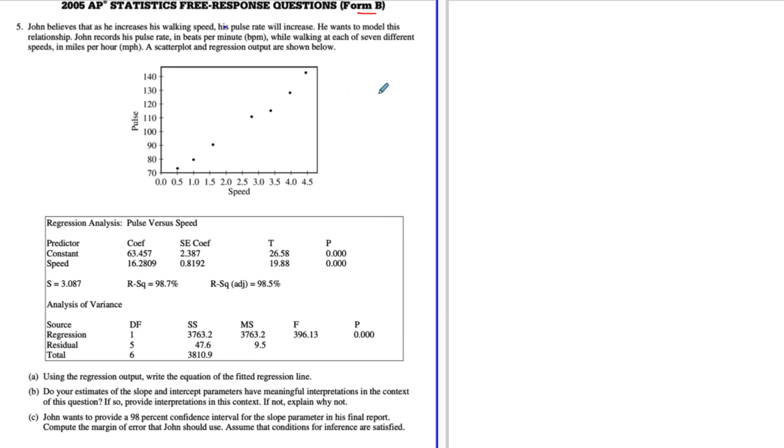All right, so this is my interpretation of number five from 2005 B. Let's do a linear regression and the AP stats free response questions.